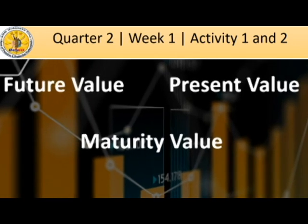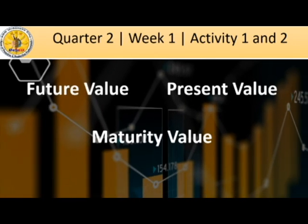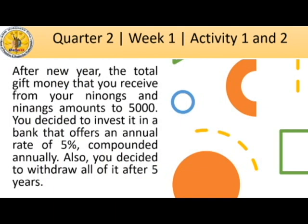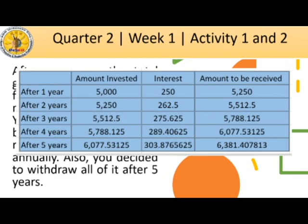If you are not familiar with the following terms, let's use a situation to define them. After New Year, the total gift money you receive from your Ninongs and Ninangs amounts to 5,000 pesos. You invest it in a bank offering 5% annual interest compounded annually and withdraw all of it after 5 years. Your money will incur interest and become 6,381.41. The money you deposited is called the principal amount or the present value. The money you withdraw after 5 years is called the maturity value or the future value.